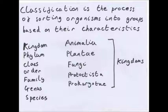Plantae: again multicellular and autotrophic — they can produce their own food, so they have chloroplasts with chlorophyll in. The cell walls are made of cellulose and they have a nucleus.